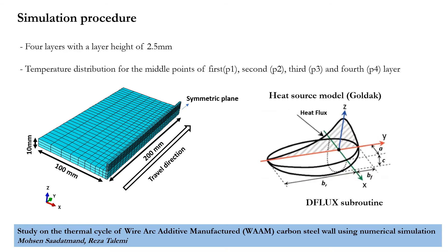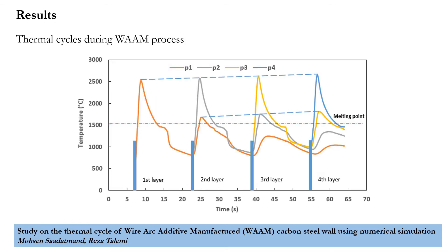Based on the Goldak model, the figure shows the thermal cycle of the middle point of the four layers. The temperature increases sharply to the peak when the heat source approaches. Also, during the deposition of a new layer, because of the preheating of the previous deposition, the peak temperature of the second layer increases.